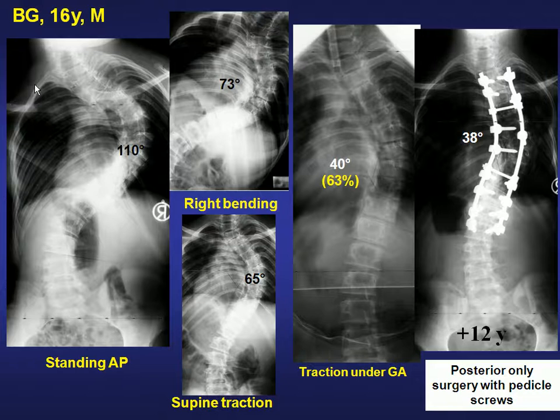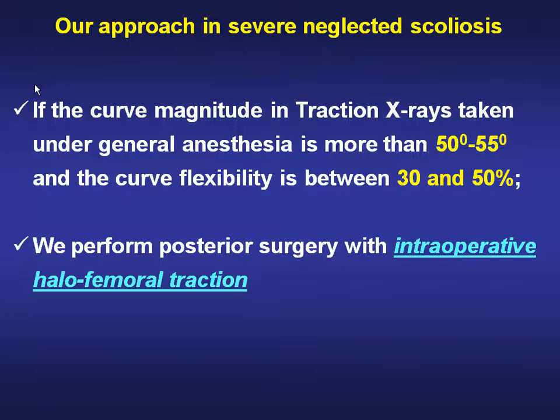This is our first case from 12 years ago. She had severe respiratory problems. According to the traditional approach, anterior release and anterior discectomy would have been required in this case. However, she was the first case in whom we used traction x-ray under general anesthesia. Traction x-ray under general anesthesia showed us more flexibility, and we performed just posterior surgery without any osteotomy.